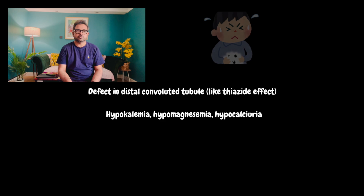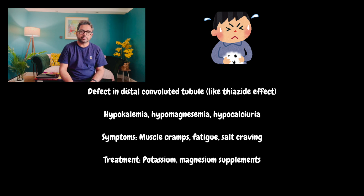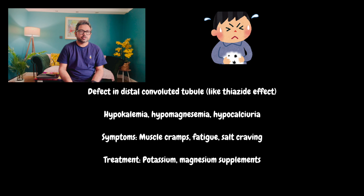Now we will discuss Gitelman syndrome. It is a defect of the distal convoluted tubule — like a thiazide effect — and it is associated with hypokalemia, hypomagnesemia, and hypocalciuria. Symptoms are muscle cramps, fatigue, and salt craving. The treatments available are potassium and magnesium supplements.